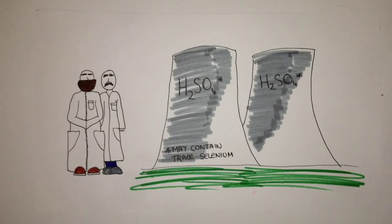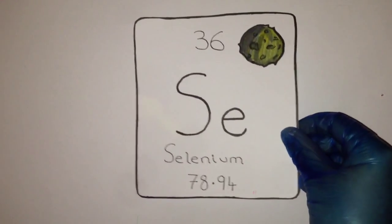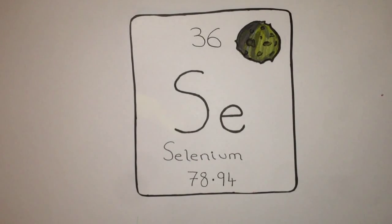After another misidentification of the element tellurium, they realized that they stumbled across a new element, naming it selenium, after the Greek goddess of the moon.